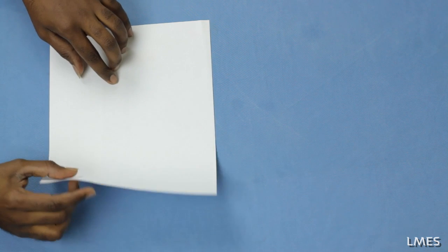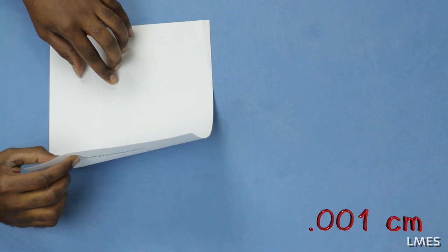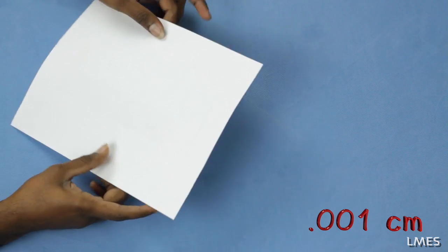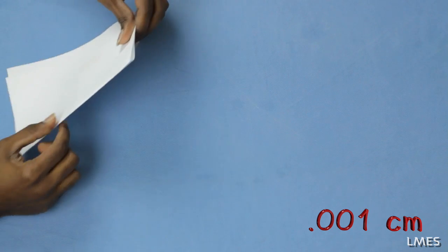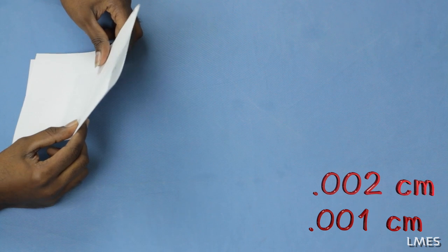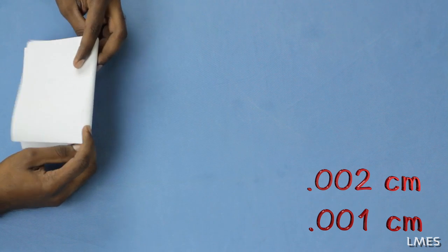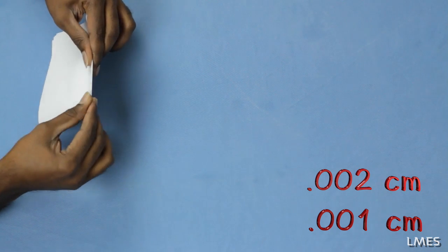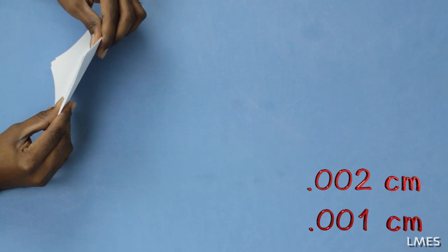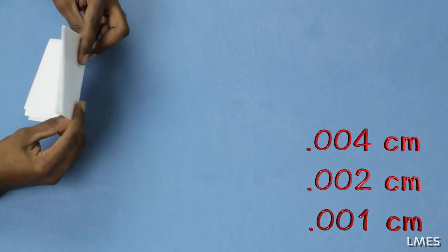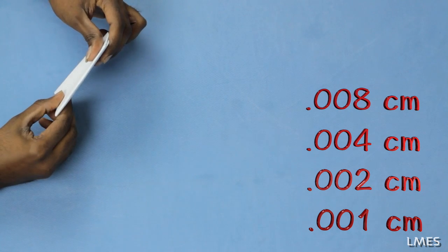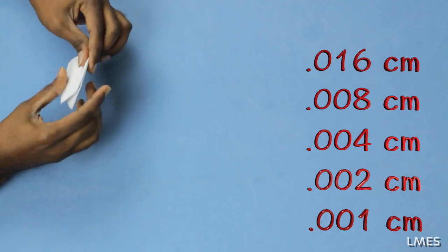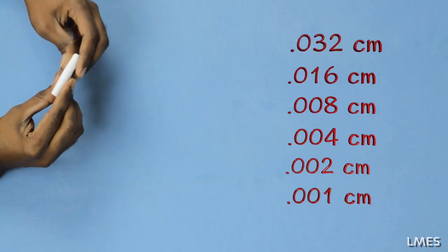In this experiment, you can take an A4 size paper. The thickness of the paper is 0.001 cm. If I fold the paper, the thickness is 0.002 cm. If I fold the paper the second time, the thickness is 0.004 cm. The third time fold is 0.008 cm. If I fold the paper, the thickness of the paper is 2 times.